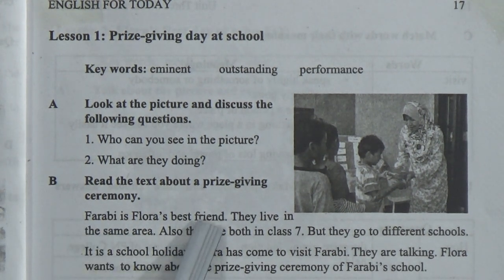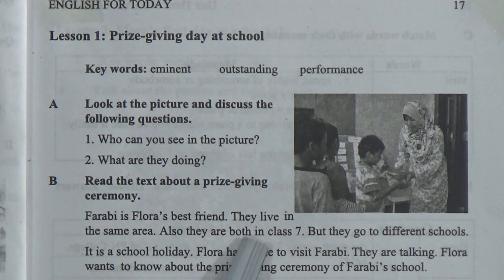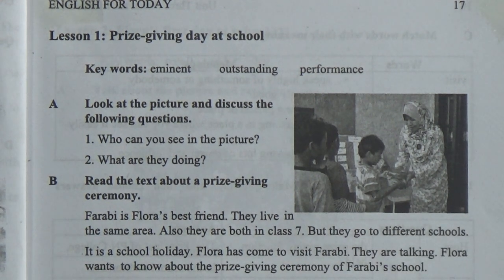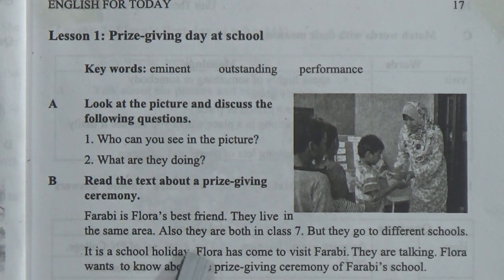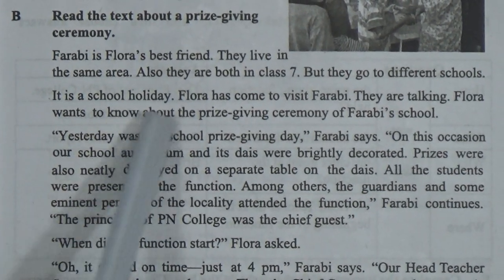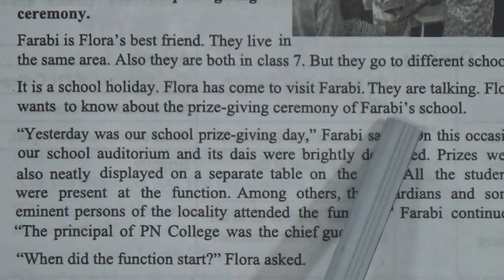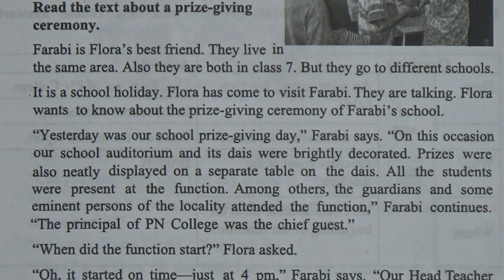Farabi is Flora's best friend. They live in the same area. Also they are both in class 7 — like you. They are also in class 7. But they go to different schools, and although they are the same age and same class, they go to different schools. It is a school holiday. Flora has come to visit Farabi. They are talking. Flora wants to know about the prize giving ceremony of Farabi's school.